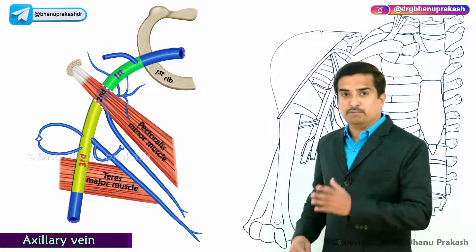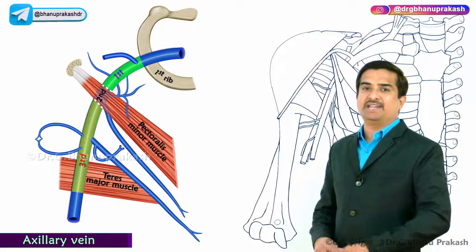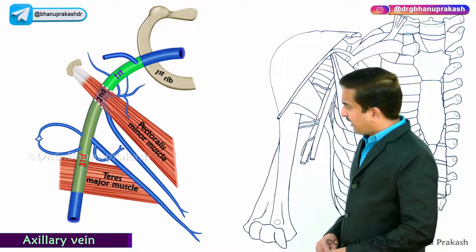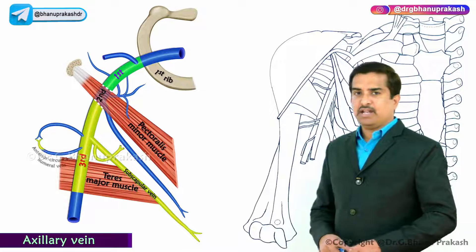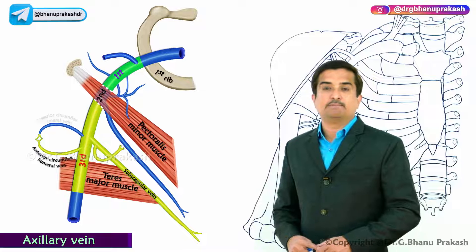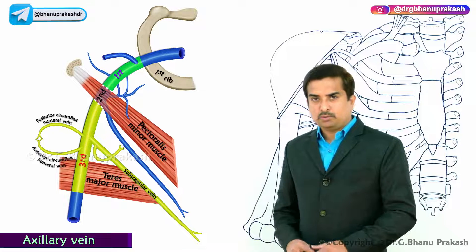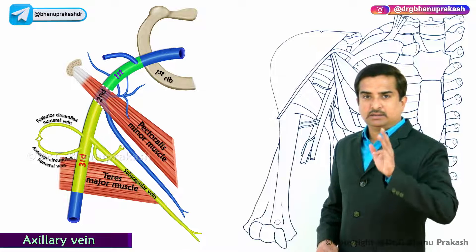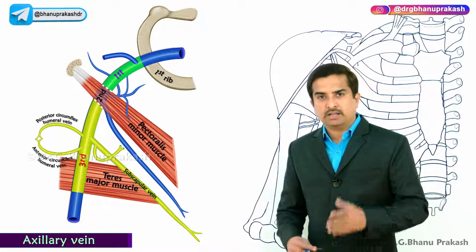The tributaries of the third part of the axillary vein are the subscapular vein, as well as the anterior and posterior circumflex humeral veins — making three tributaries in total for the third part.